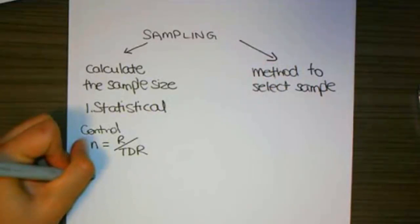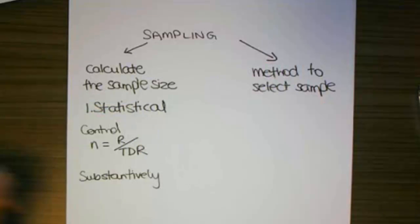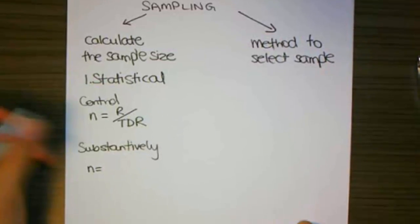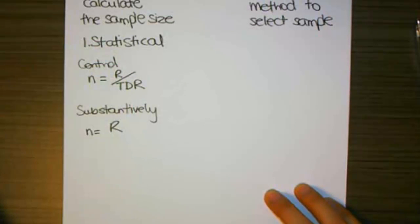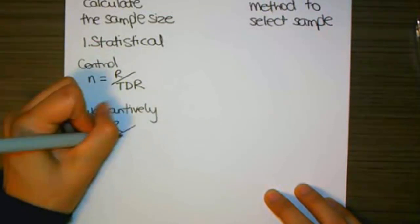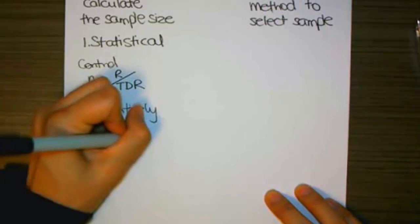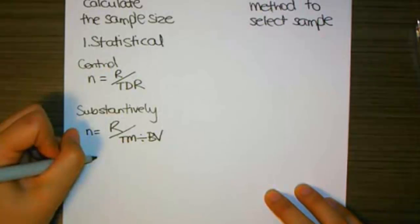When we're looking substantively, we use a similar formula. N equals the reliability rate, but instead of using the tolerable deviation rate, we use materiality divided by book value. And that's often rewritten in this particular format here.